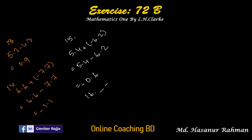Number 16: minus 3.4 minus 5.8. Both signs are negative, so we have to add. So 3.4 plus 5.8: 4 plus 8 is 12, carry 1, then 5 plus 1 is 6, and 6 plus 3 is 9. Answer is 9.2, and the symbol is negative.